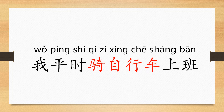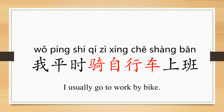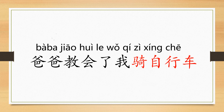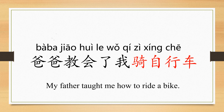我平时骑自行车上班。平时 means 'usually, in normal times.' 上班 means 'go to work.' 我平时骑自行车上班 — I usually go to work by bike. 爸爸教会了我骑自行车。教 means 'teach.' 爸爸教会了我骑自行车 — My father taught me how to ride a bike.